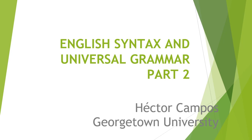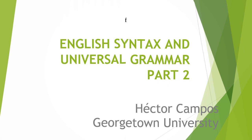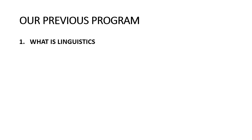Welcome to the second part of English Syntax and Universal Grammar. My name is Hector Campos from Georgetown University. In our previous program, we saw four different topics. First, we discussed what linguistics is, and we drew a very important distinction between what we called e-language and i-language. We concluded that linguists are interested in making a model for i-language, using e-language as the window to i-language.